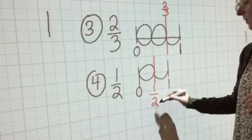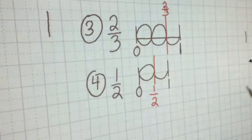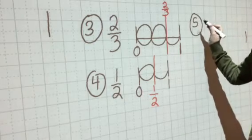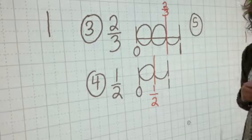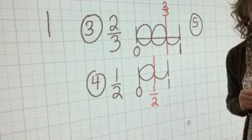Now this is what I want you to do on your own. For number five, you are going to make up a fraction and then you're going to plot it on your number line. Go ahead, do that now, and then turn this paper in.